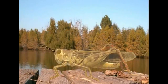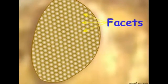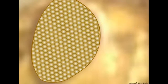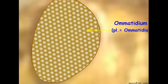The main visual structure of insects is the compound eye. The compound eye appears to be comprised of many hundreds or thousands of tiny facets. Each facet is actually the corneal lens for an individual photoreceptor unit called an ommatidium.